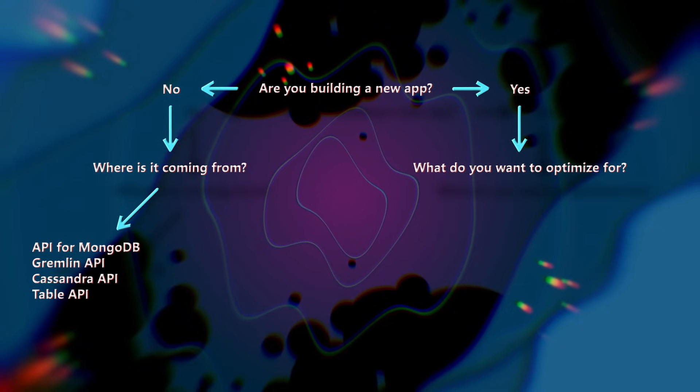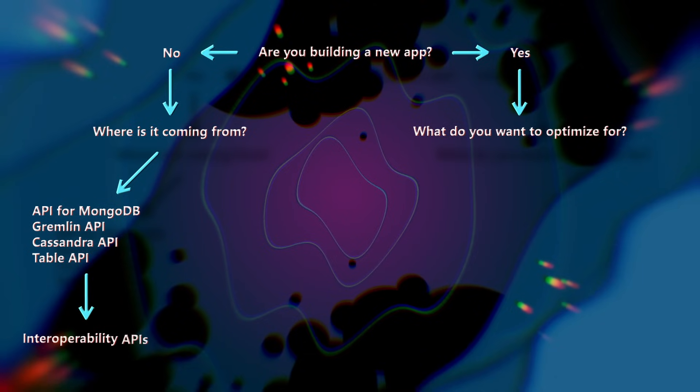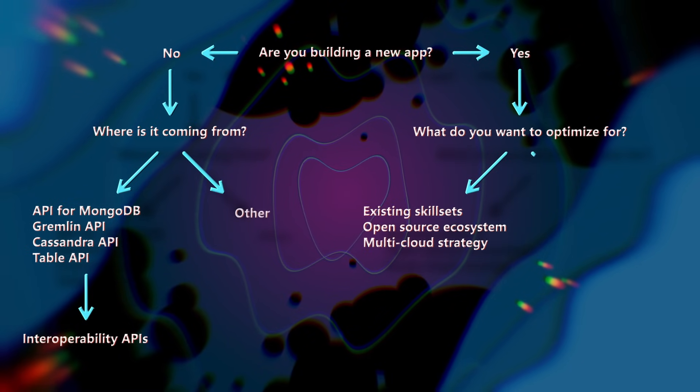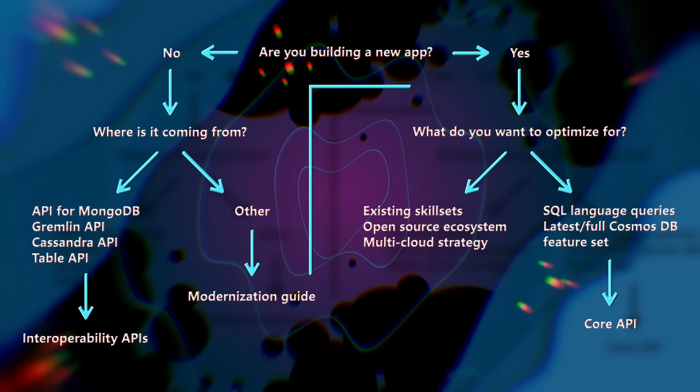If you're coming from Mongo, Cassandra, Gremlin, or Azure Table Storage, the objective is pretty straightforward. In order to minimize the amount of effort needed to migrate into Cosmos DB, we recommend a Cassandra user onboard into the Cassandra API, and the same for Gremlin, Mongo, and Table. In contrast, if you're building a new application, we recommend you use the core API.